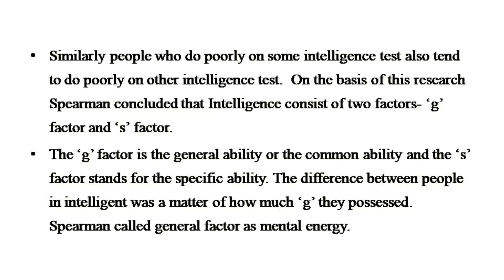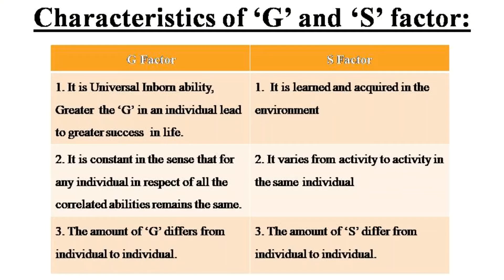On the basis of this research, Spearman concluded that intelligence consists of two factors: G factor and S factor. The G factor is the general ability or common ability, and the S factor stands for specific ability. The difference between people in intelligence was a matter of how much G they possessed, and Spearman called this general factor mental energy. G factor is universal and inborn; the greater the G in an individual, the greater the success in life. S factor is learned and acquired from the environment. G factor is constant — for any individual, in respect of all correlated abilities, it remains the same — while S factor varies from activity to activity in the same individual. The amount of G differs from individual to individual, and similarly the amount of S also differs from individual to individual.